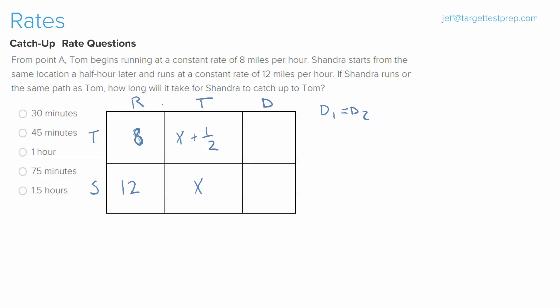Now here's the best part: rate times time equals distance. So we have Tom's distance as 8 times x plus one half, which in other words is 8x plus 4, and then Sandra's distance simply at 12x.